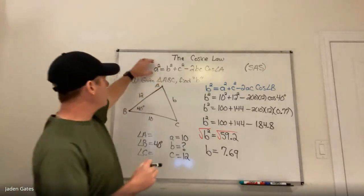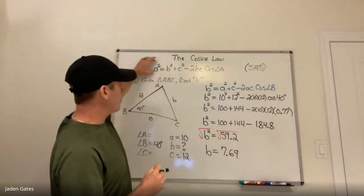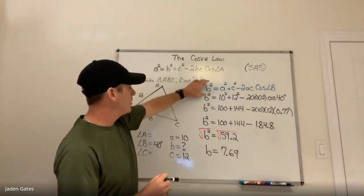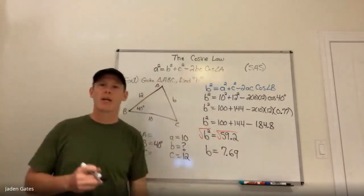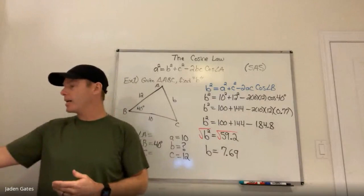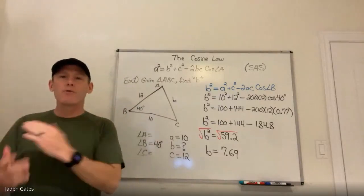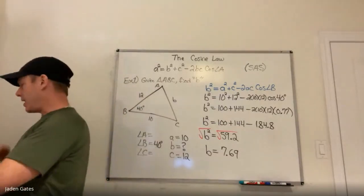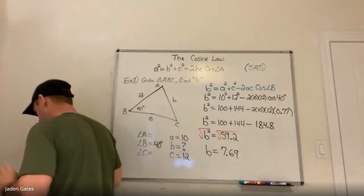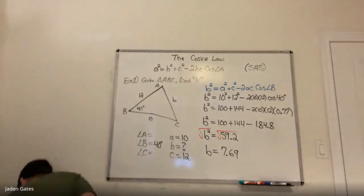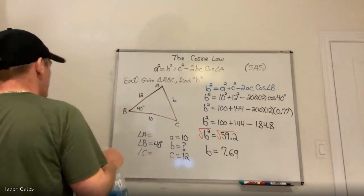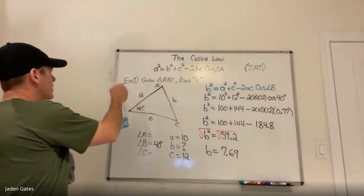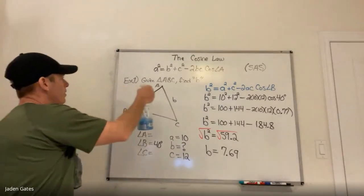We had to rearrange our original formula so that we can solve for b directly. Because we did that, we don't have to move things around at the end, which again can cause problems. Let's try another example — a different situation.